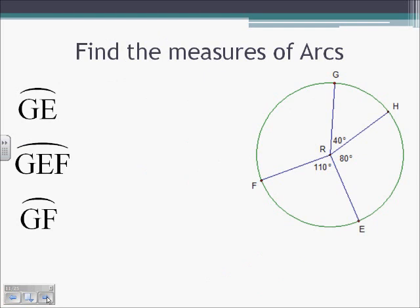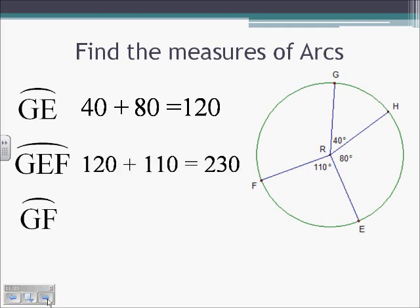Finding measures of arcs: arc GE equals the measure of GH plus the measure of HE, which is 40 plus 80, giving 120. Arc GEF equals GE plus EF, which is 120 plus 110, giving 230. To find arc GF, that's the minor arc on the other side of GEF, so we take 360 minus 230, giving arc GF equals 130.